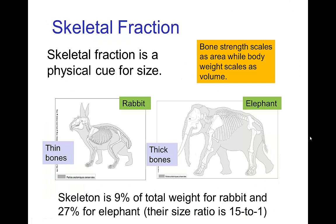This leads to a number of physical cues for animals. Since bone strength depends on cross-sectional area, small animals can have thin bones, whereas large animals need proportionally thicker bones to support their weight. We see this in the skeletal fraction: the skeleton is only nine percent of the total weight of a rabbit, whereas for an elephant, the skeleton is twenty-seven percent of its weight. This puts an ultimate limit on the size of an animal, since you can't have an animal that's all skeleton.